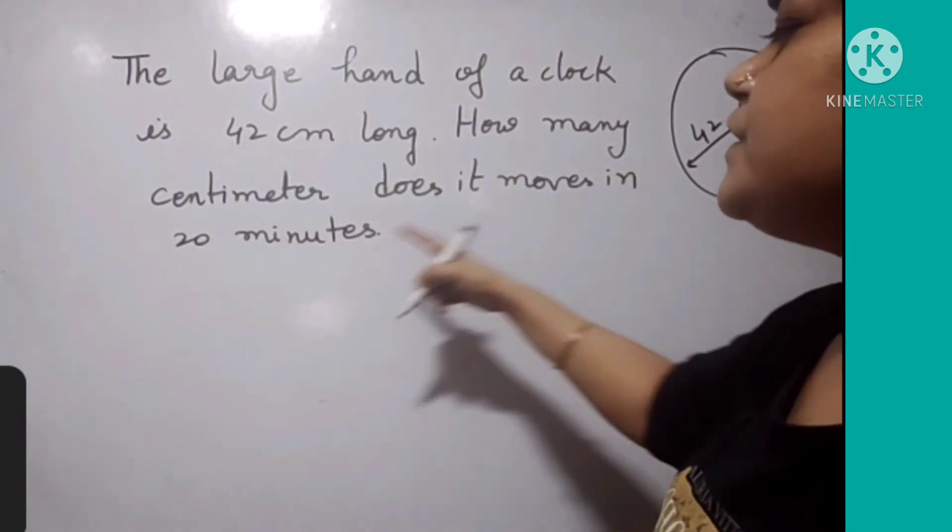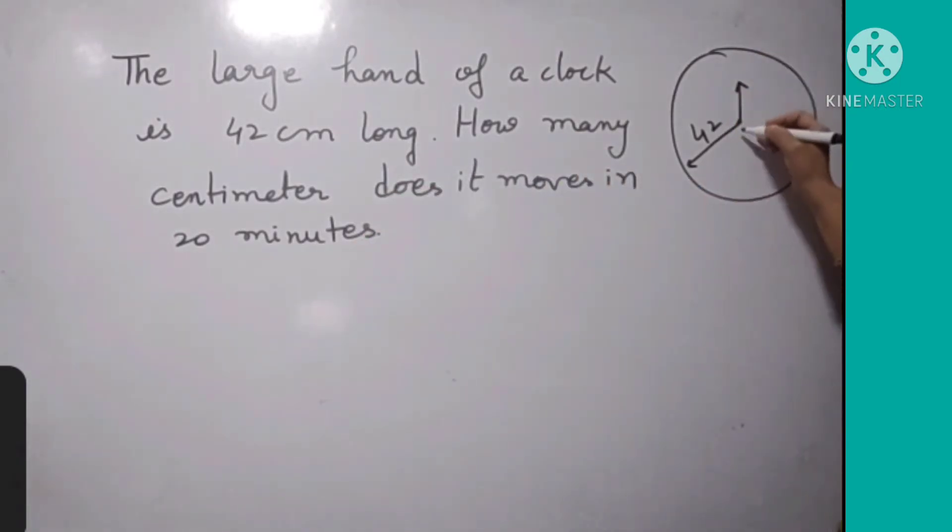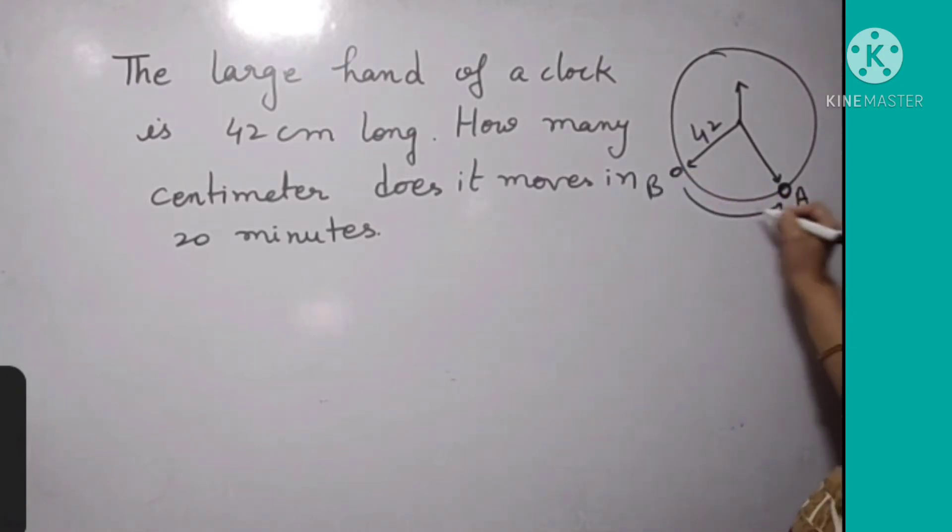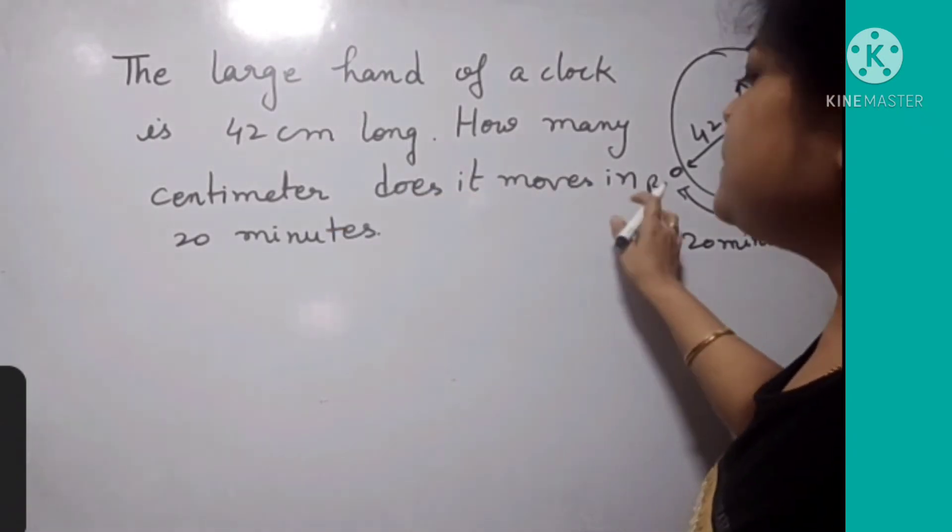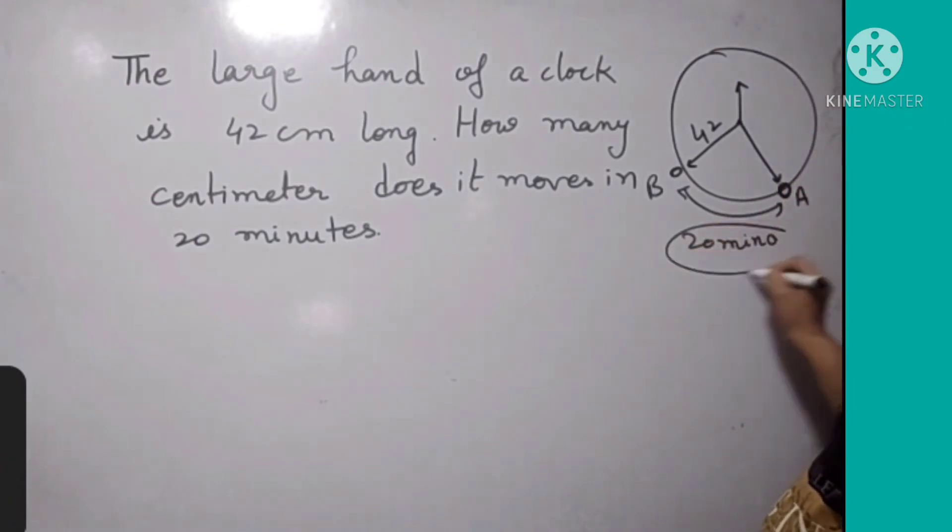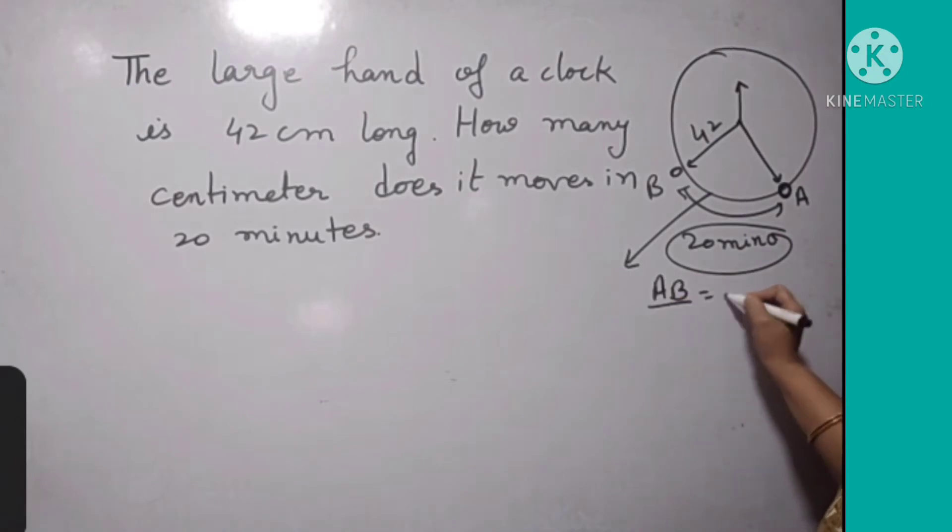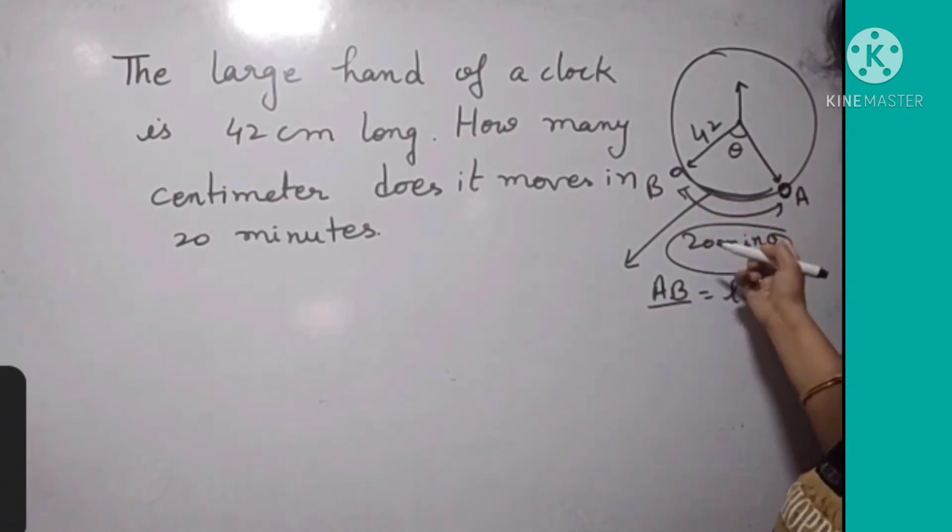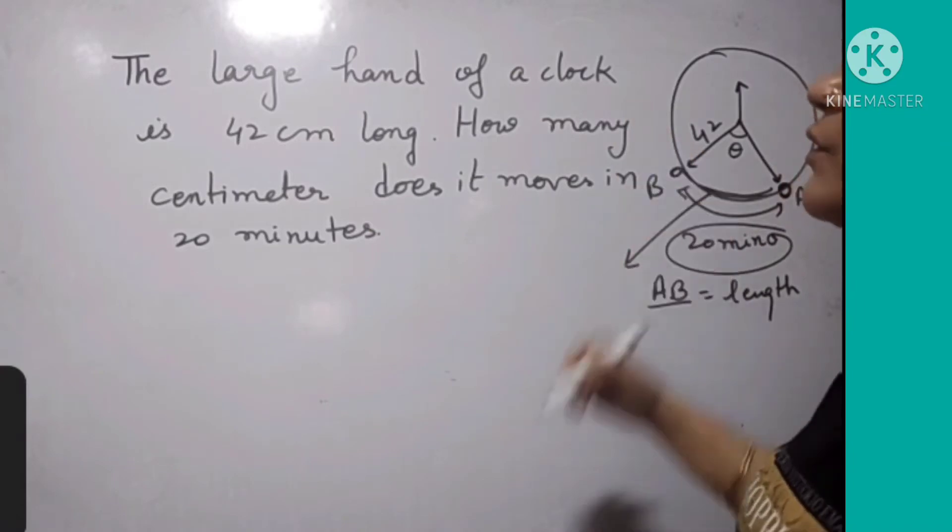How many cm does it move in 20 minutes? For example, in 20 minutes, this long hand is initially at this place and after 20 minutes it is at this place. So he covers this distance in 20 minutes. The distance from A to B - we have to find this length. There is a theta angle in between the two positions.